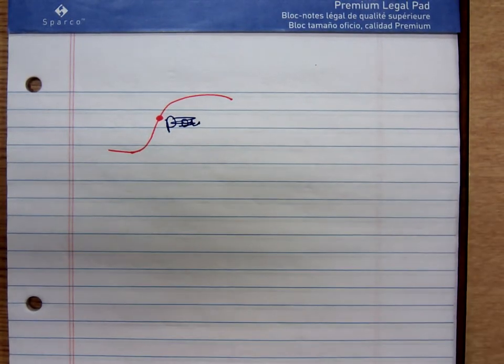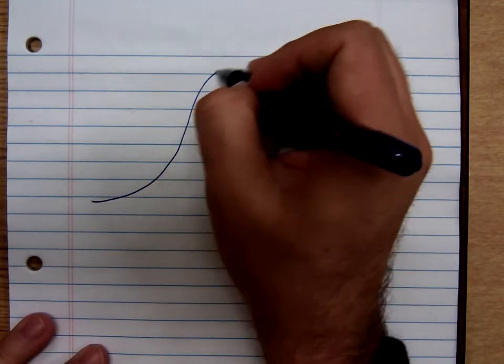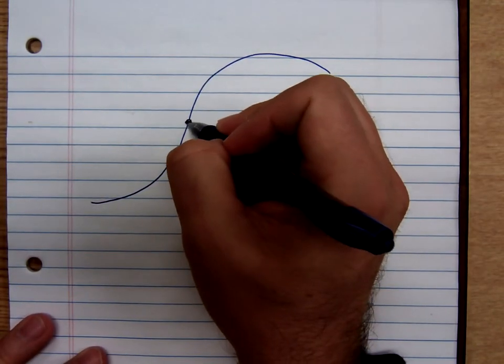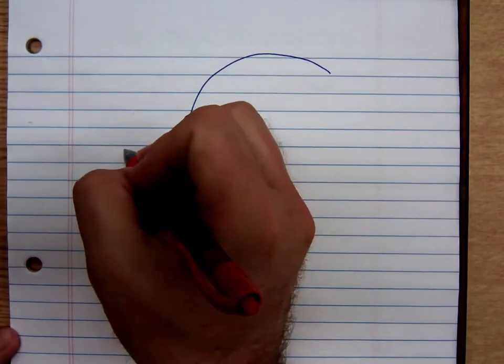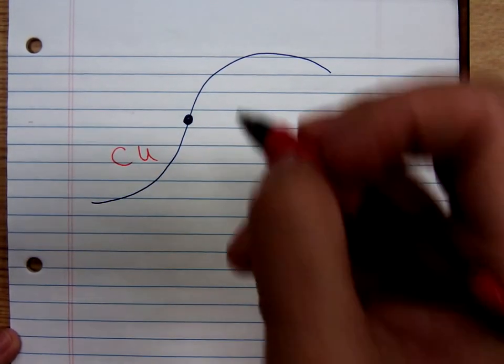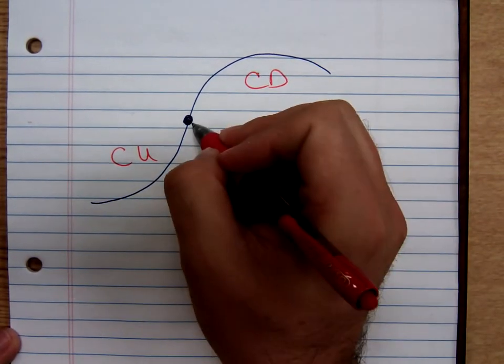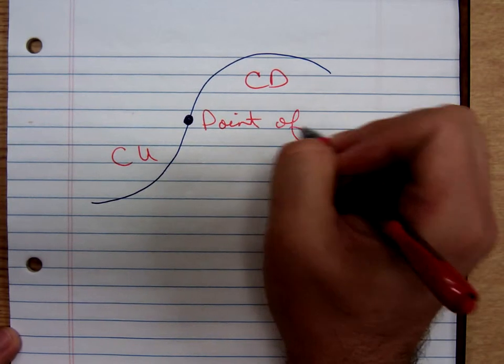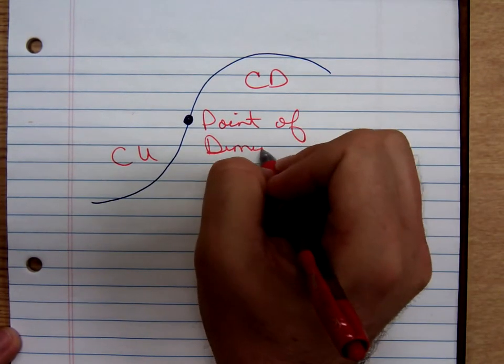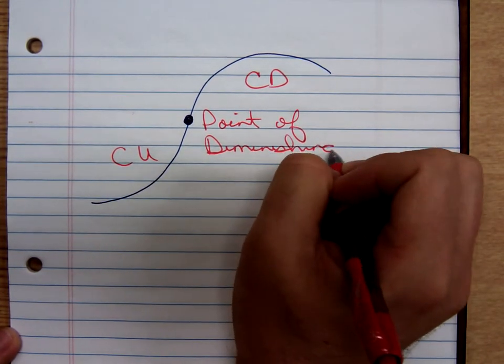So, this point here is referred to as the point of diminishing returns. Let me draw it real big. And concavity is changing somewhere out there. And that point, it's concave upward to the left, concave downward to the right. That is called the point of diminishing returns.